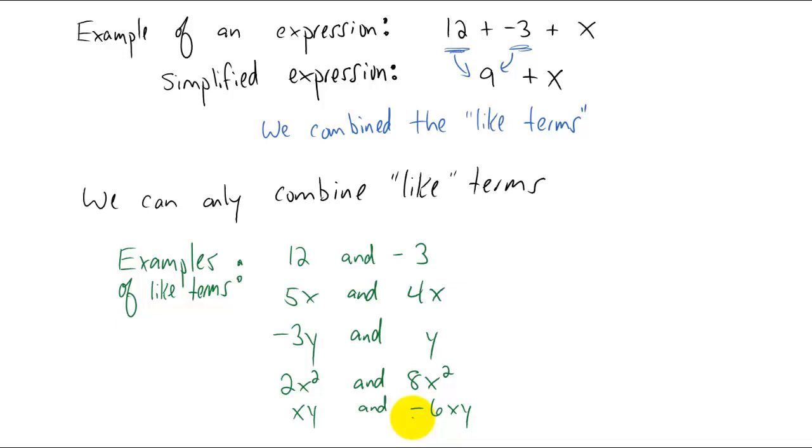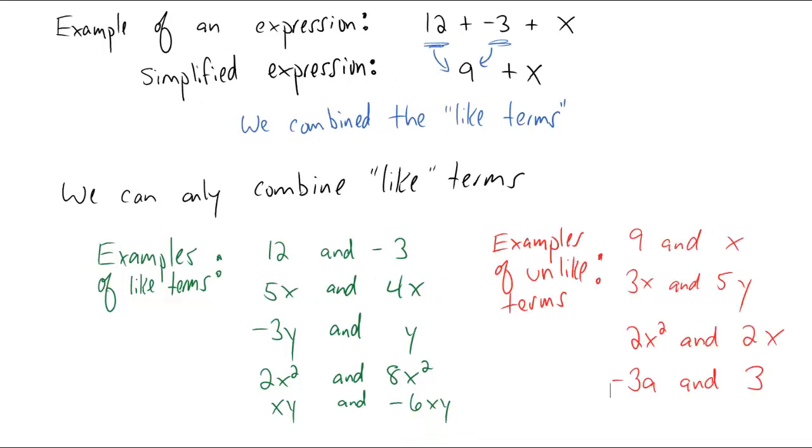So let's look at some examples of terms that are unlike terms. Alright, here in red are some unlike terms. Nine and x from above we could not combine because the term nine does not have an x in it. 3x and 5y are unlike terms because in this term there's an x, in this term there's a y. There's different variables.